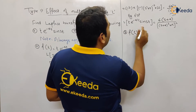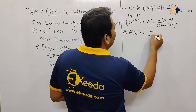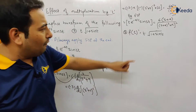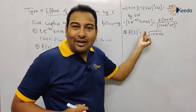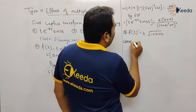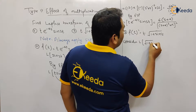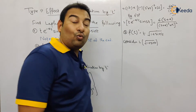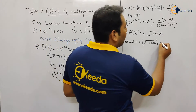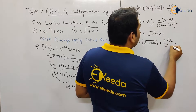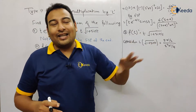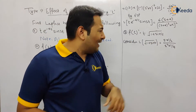Done with problem number two. Now we're going to solve problem number three. F(t) here is t·√(1 + sin(t)). This problem can come in the exam for five marks. Forget about the effect of multiplication by t property — you are left with √(1 + sin(t)). We have already covered the Laplace of this in type one and type two, so writing it directly: it is (s + 1/2) / (s² + 1/4).